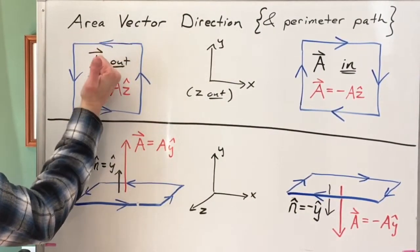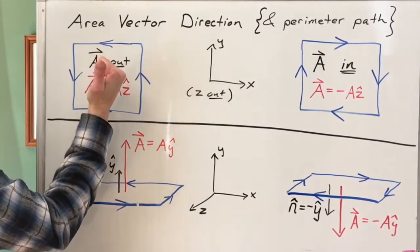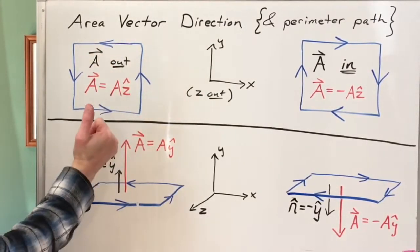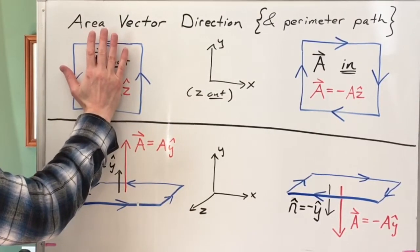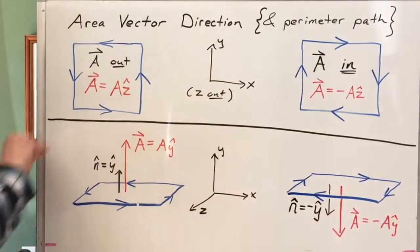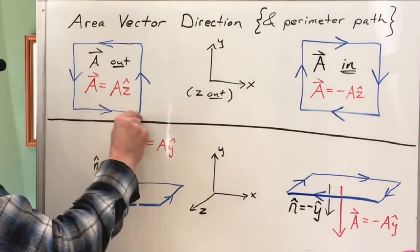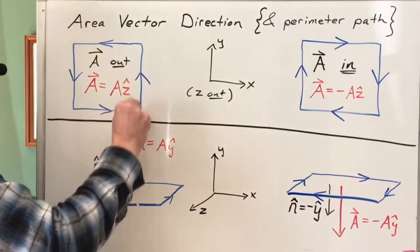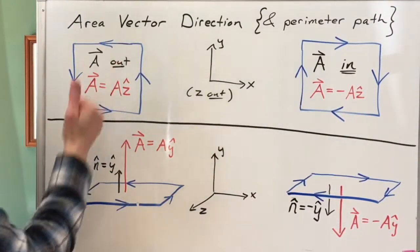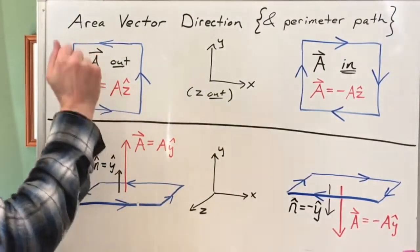then to get my area vector direction, I curl my fingers of my right hand in the direction that I'm traversing the perimeter, and my thumb will point in the perpendicular direction for the area vector. So if I have this area in general, I could choose in or out as my area vector, but once I set the perimeter, once I decide I want to go around the perimeter this way and call that my positive path around the perimeter, then the area vector has to be out. So in this case, the area vector would be in the Z direction.